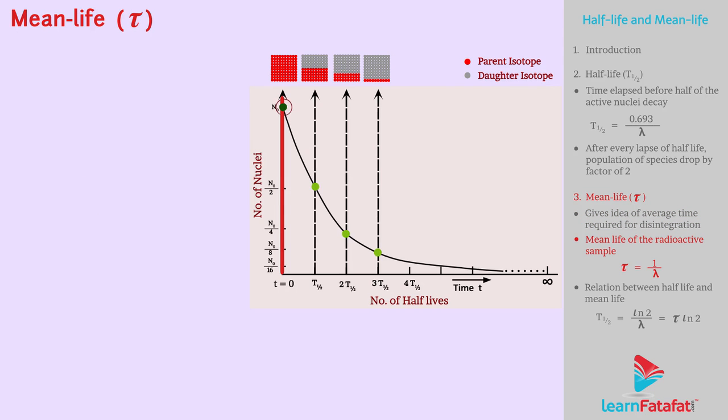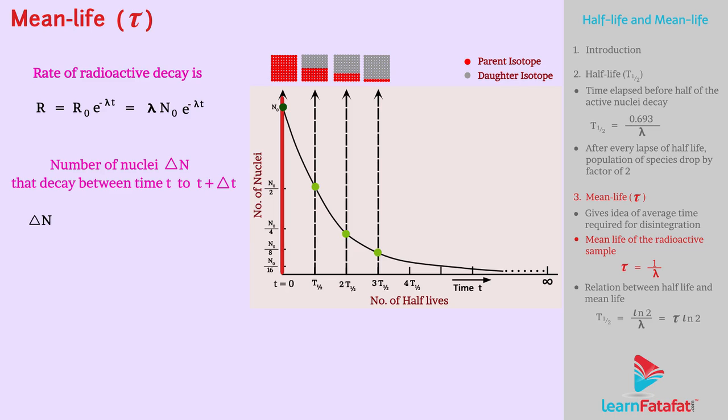Consider a sample having N₀ radioactive nuclei at time t = 0. If rate of radioactive decay is R = R₀e^(-λt) = λN₀e^(-λt), then the number of nuclei ΔN that decay between time t to t + Δt would be ΔN = RΔt = λN₀e^(-λt)Δt.